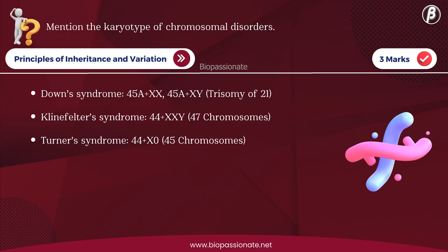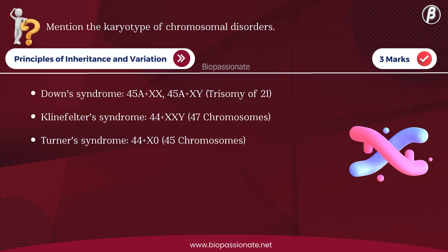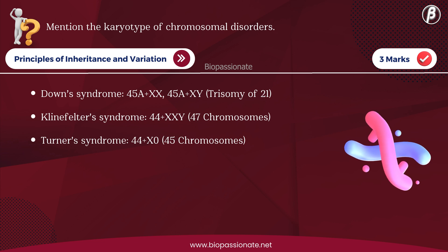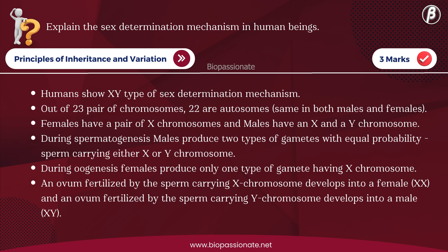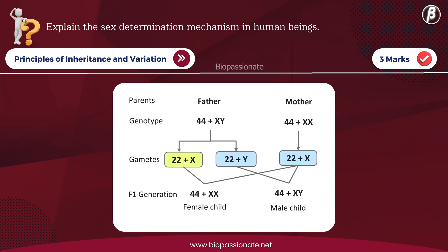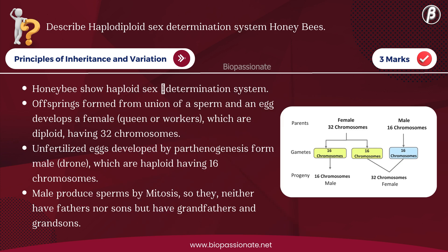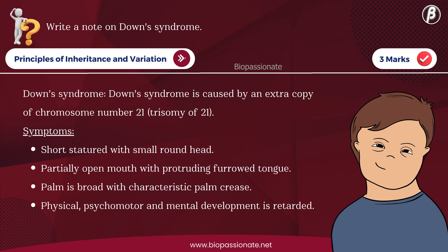Mention the karyotype of chromosomal disorders — for three marks. Explain the sex determination mechanism in human beings — for three marks. Describe the haplodiploid sex determination system in honeybees — for three marks. Write a note on Down syndrome — for three marks.